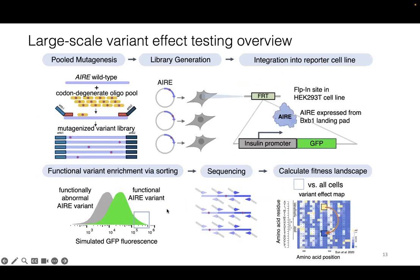Knowing that, I could then do this in high throughput. I put the whole library of all variants into the reporter cell line, sorted for the functional bin versus all cells, and calculated the allele frequency of cells in the high bin versus the total. Using a pipeline developed in our lab called Tileseq-Mut, I was able to calculate a fitness landscape for the autoimmune regulator.